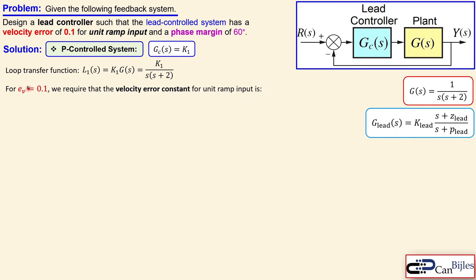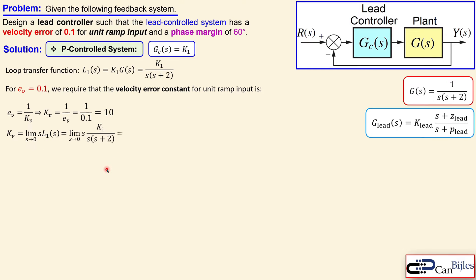For a velocity error of 0.1, we require the velocity error constant Kv for a unit ramp input. The velocity error is given by 1/Kv, so Kv = 1/ev = 10. The velocity error constant is also given by the limit as s approaches zero of s times the loop transfer function. Performing this calculation, s cancels with the pole at the origin, yielding K1 over 2.